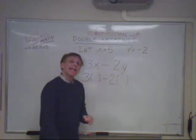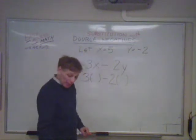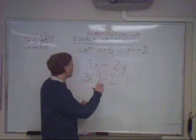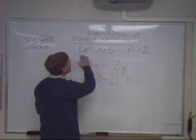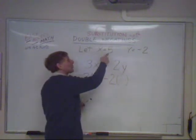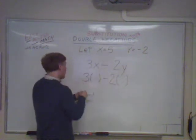And you really want to be careful when you're working with negative numbers, especially with double negatives, which could occur. What I'm going to do is substitute the numbers that I'm told to, x equaling 5 and y equaling negative 2, into the binomial.